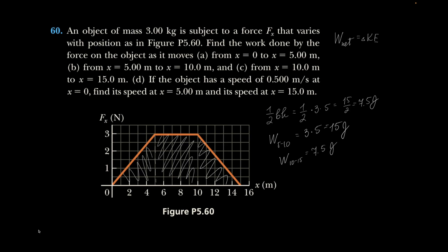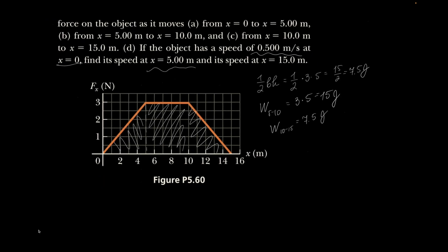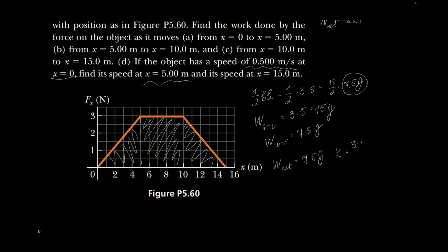If the object has a speed of 0.5 meters per second at x equals 0, it already has a certain amount of kinetic energy, and then we want to find the speed at x equals 5. The net work done on the object by the time it got to 5 is 7 and a half joules. Kinetic energy initial was 3 times 0.25 over 2 — from 3 kilograms of mass and 0.5 squared giving 0.25 — over 2.